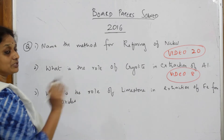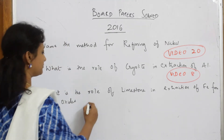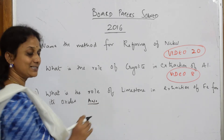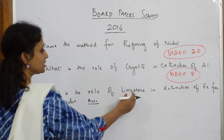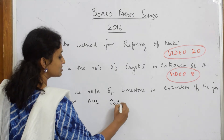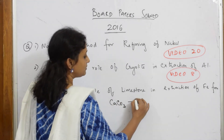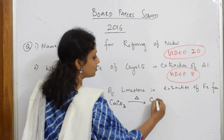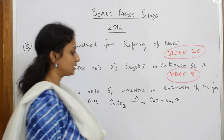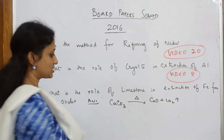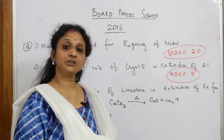Next: what is the role of limestone in the extraction of iron? Let us do this — iron from its oxides. Limestone formula: you can write the answer in equation form or in words, not a problem. Limestone is basically calcium carbonate (CaCO₃). When you heat limestone, it dissociates into calcium oxide (CaO) plus carbon dioxide (CO₂).